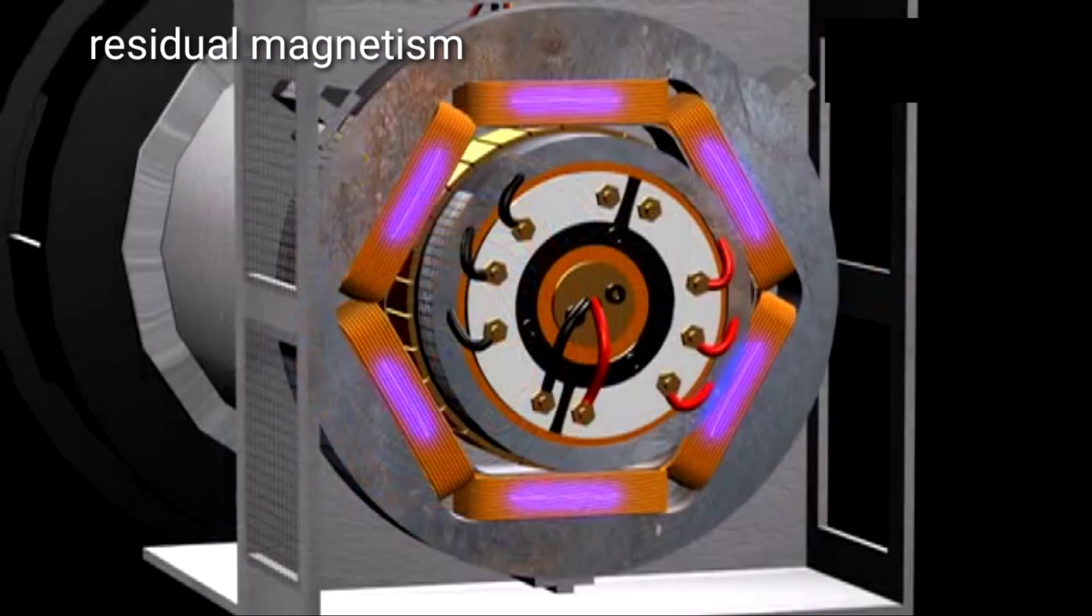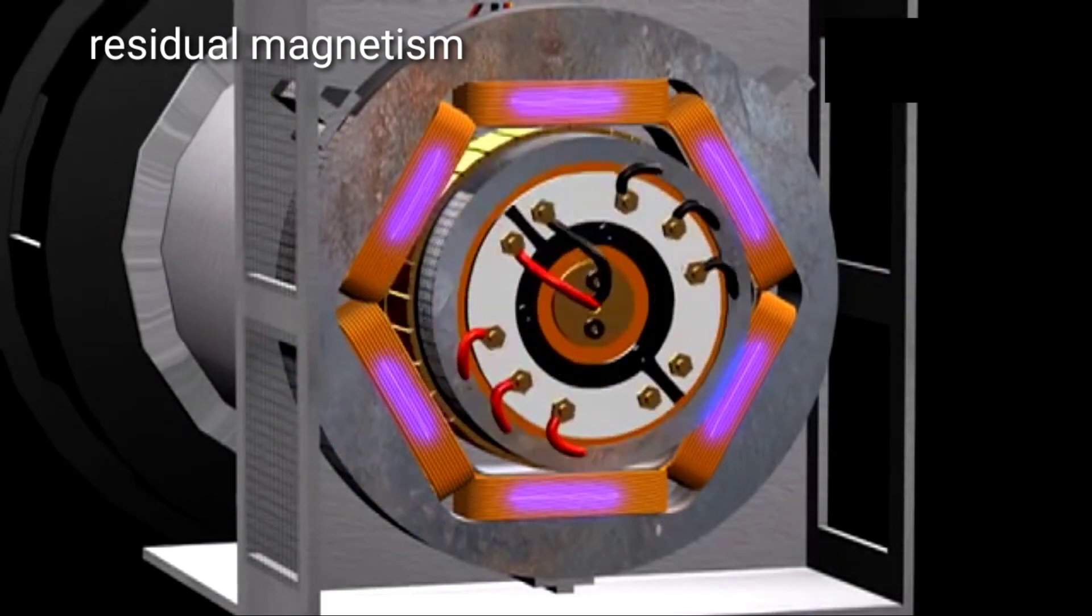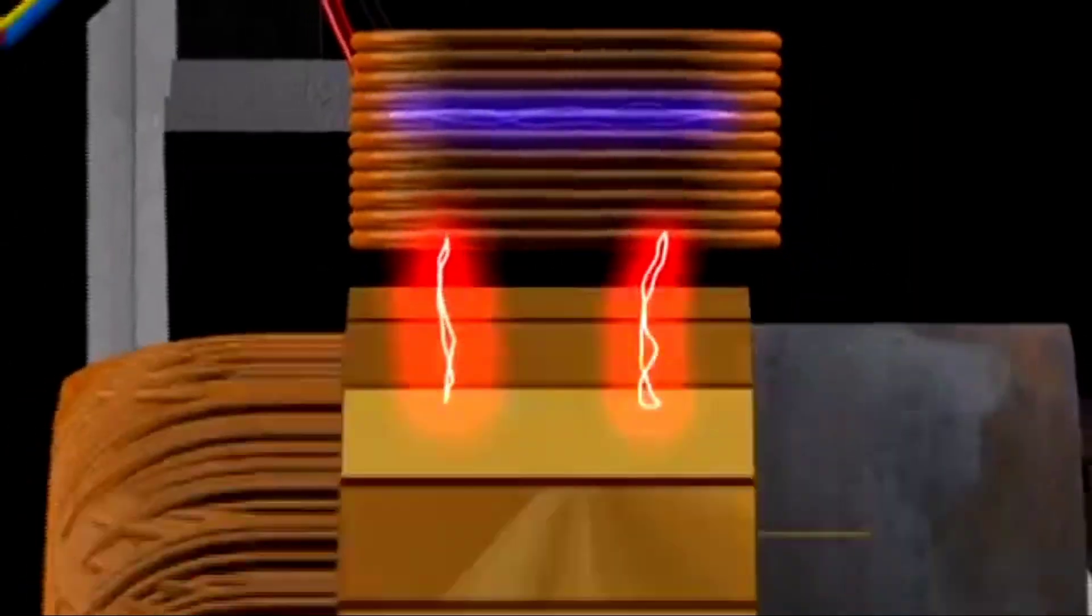The exciter has residual magnetism present in it. When the rotor starts rotating, AC output is generated in the exciter rotor coil.